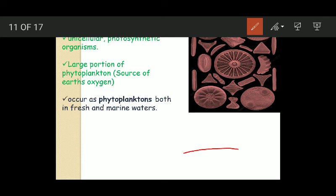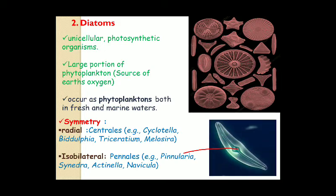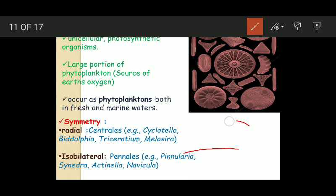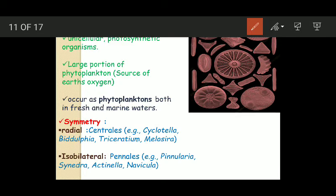Now their symmetry. Two types of symmetries are found in diatoms. One is radial symmetry and second is isobilateral symmetry. In radial symmetry, the body can be divided into two equal halves by more than one plane. This type is characteristic of centrales and includes Cyclotella, Biddulphia, Triceratium, and Melosira. Isobilateral symmetry is when you can divide the body into two equal halves only by a single plane. Examples are pennales including Pinnularia, Synedra, Actinella, and Navicula.